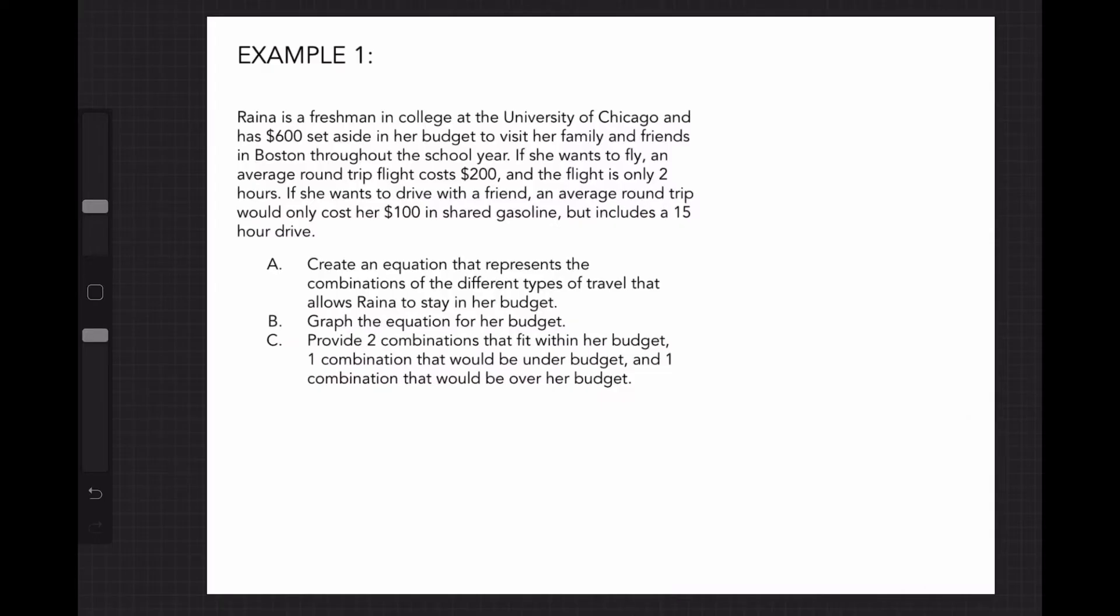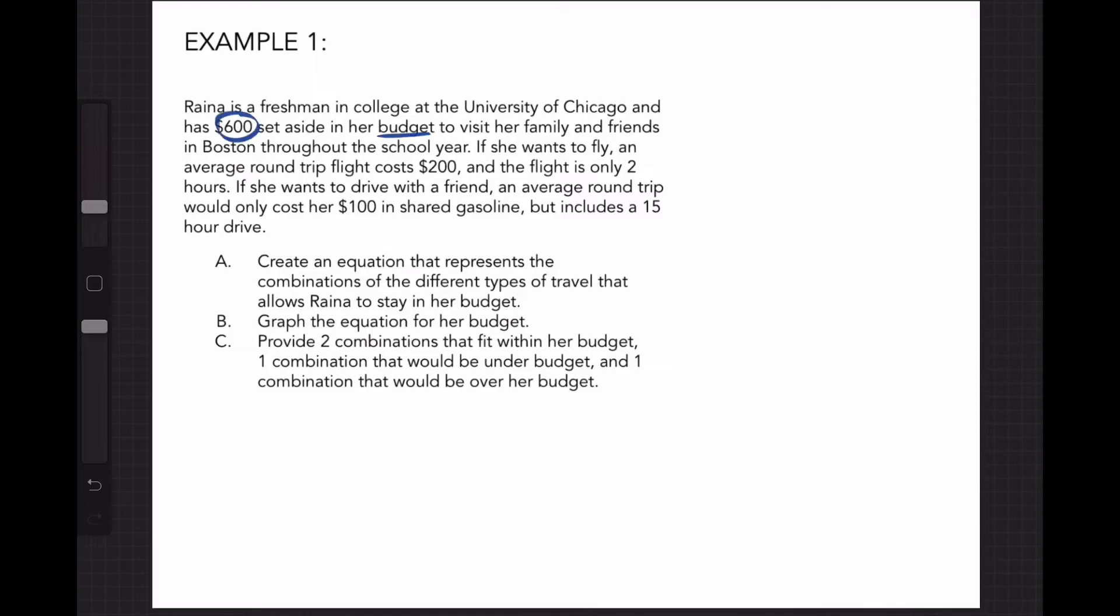When I see big word problems like this, I like to review them once more to annotate it and set the problem up with the parts I need to solve it. I can circle $600 and label this as my budget. I can also circle $200 for the flying and $100 for the driving and use different variables to represent the two types of travel. I'll use X for flying and Y for driving.